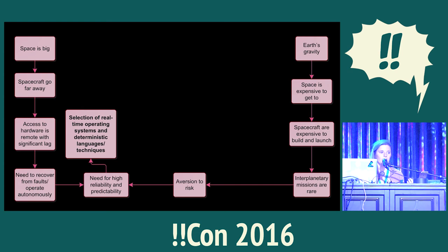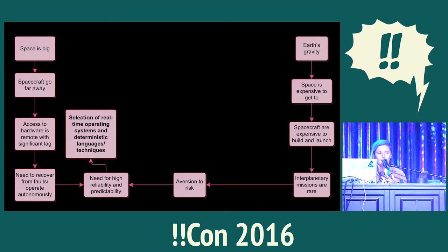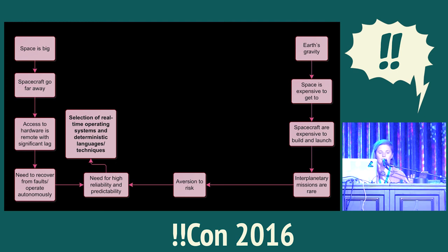Some examples of languages we use to achieve deterministic code: C is a big one, ADA — which I haven't personally used — and FORTH. These are languages we've been using for the past few decades to program computers that run spacecraft.